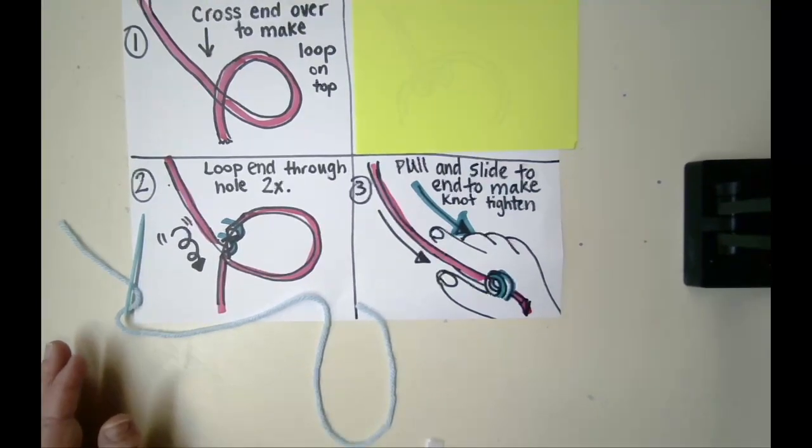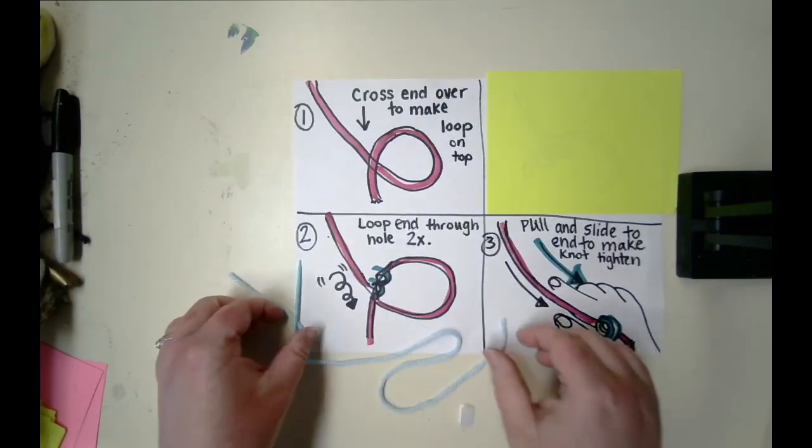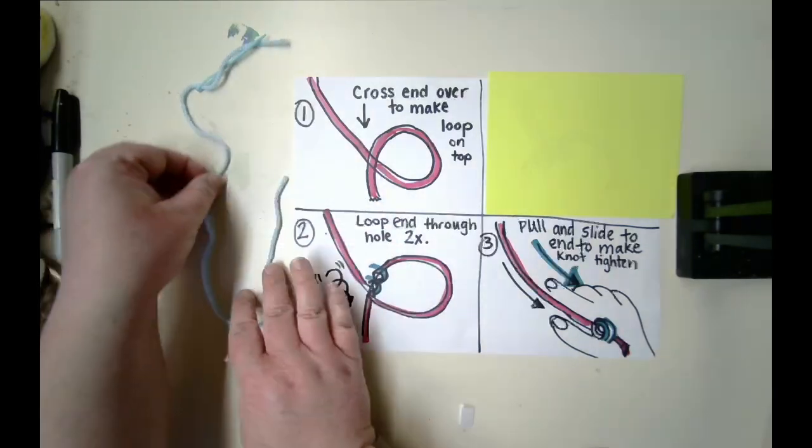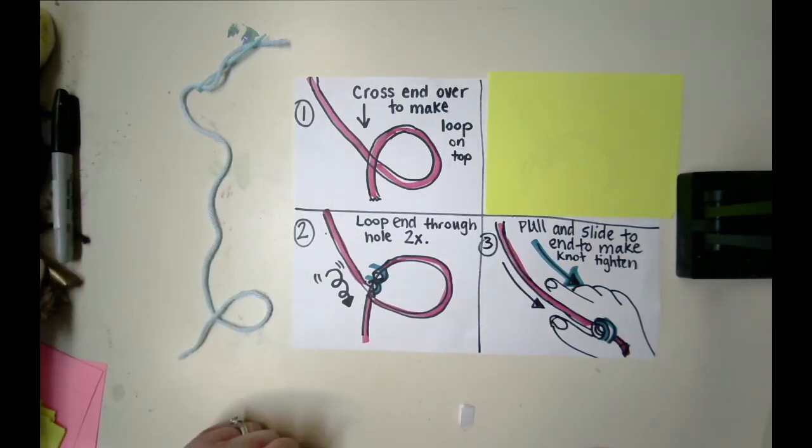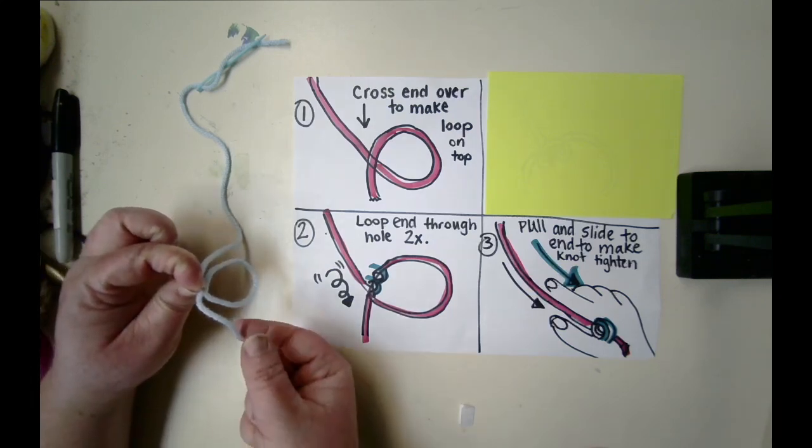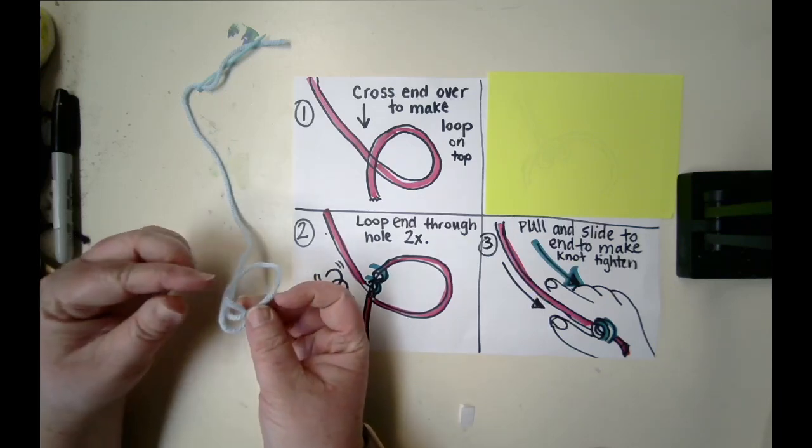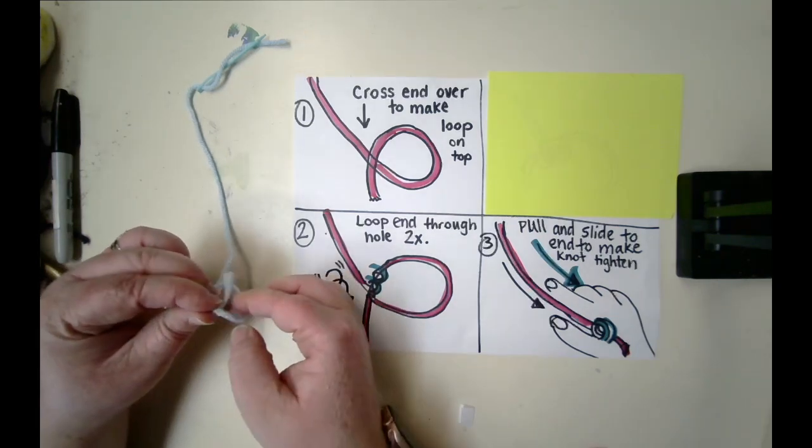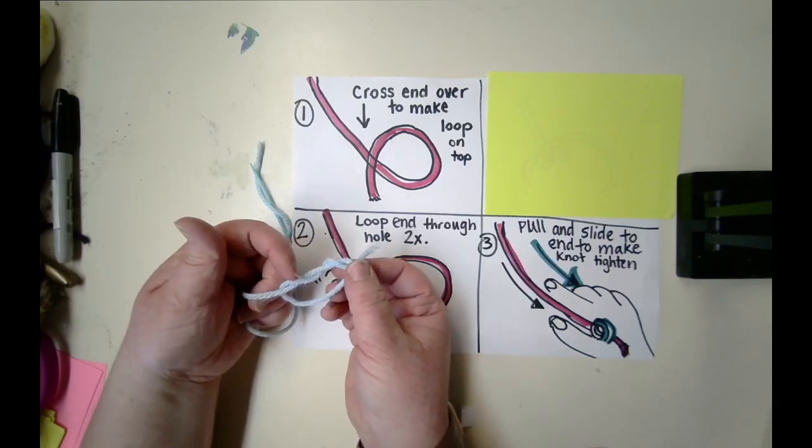Step one is to cross your end over and make a loop on top. Sometimes I make a letter U to begin with, and then I'm going to cross my string over to make that loop. Step two, we're going to loop our end through our hole two times. I do this by lifting it up, taking the end, and poking it through the hole. I'm going to come around a second time and poke it through the hole again.